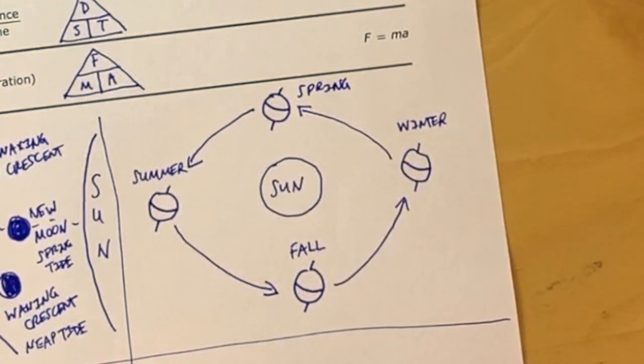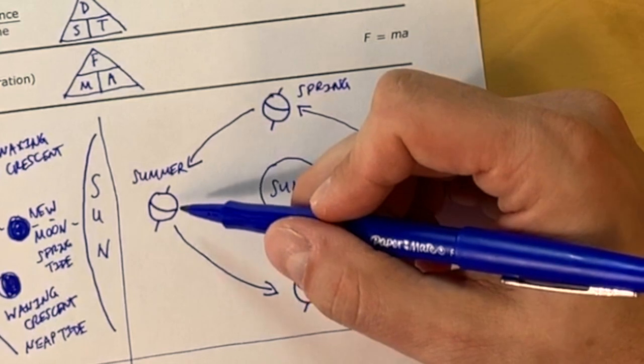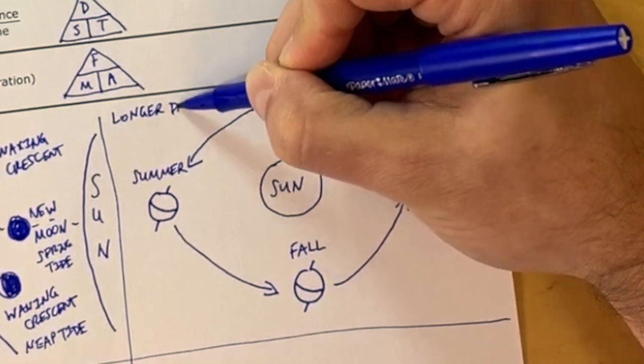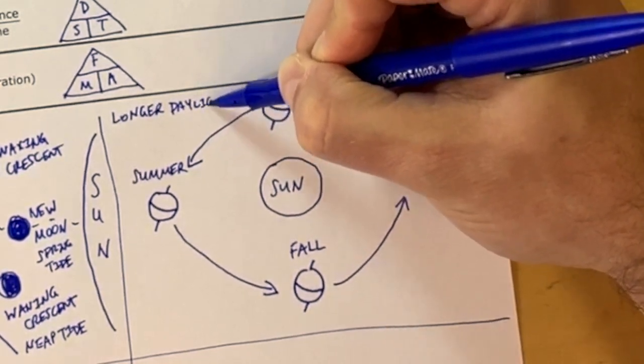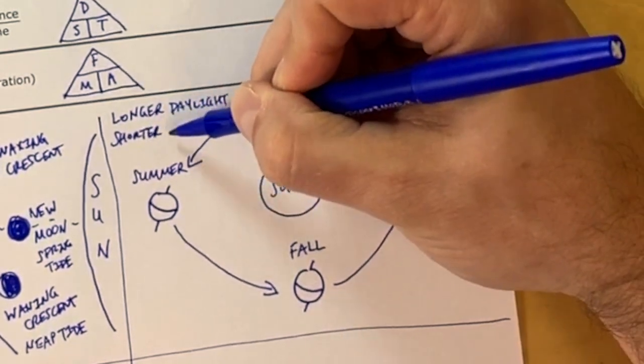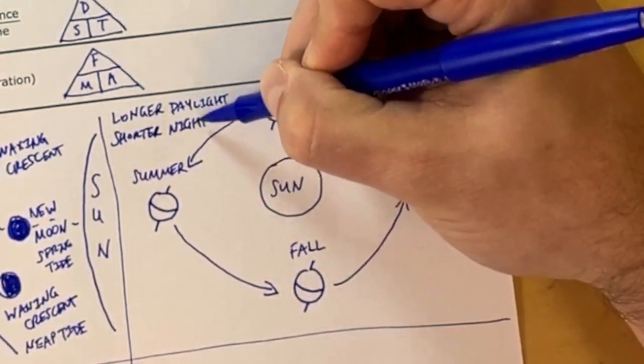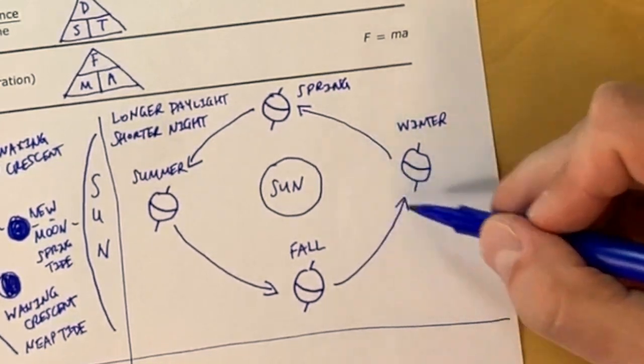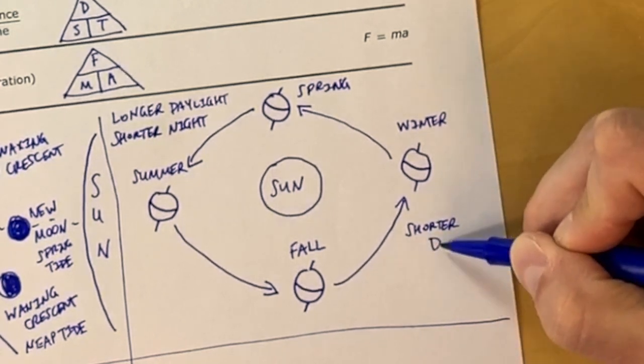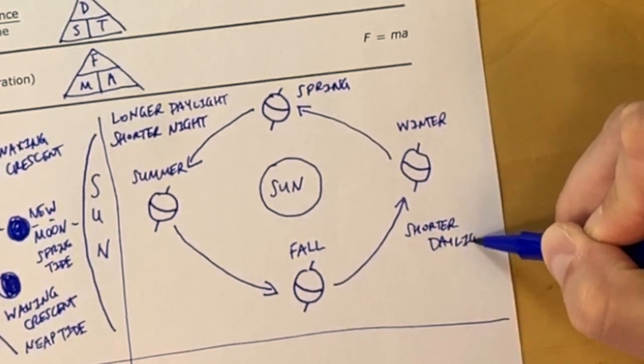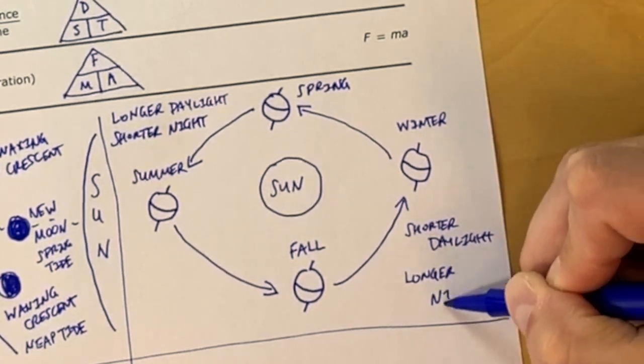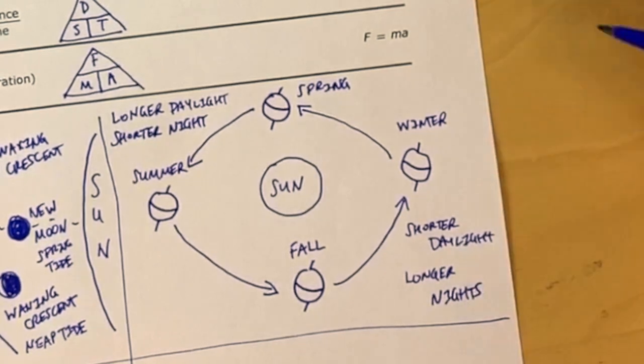Knowing that is great, but you also need to know that in the summer, we have long daylight hours and short night hours. In the winter, we have short daylight hours and long nighttime hours. And it will be opposite in the southern hemisphere. Right now, we're just looking at the northern hemisphere.